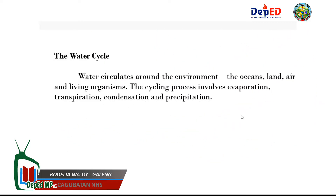The water cycle: water circulates around the environment through the oceans, land, air, and living organisms. The cycling process involves evaporation, transpiration, condensation, and precipitation.